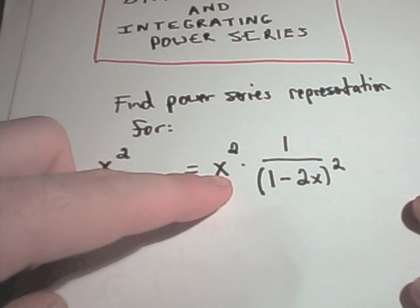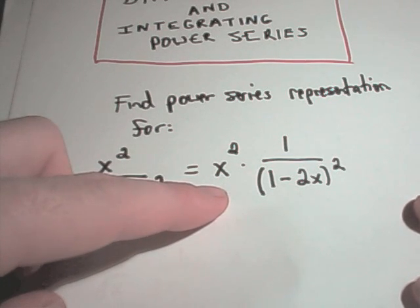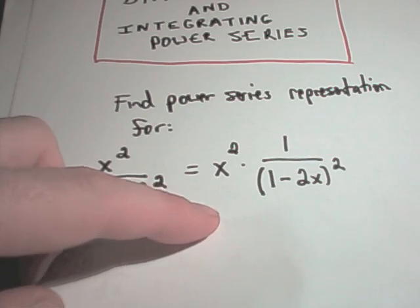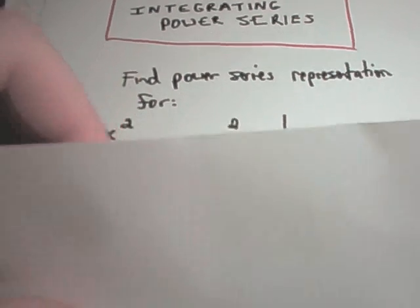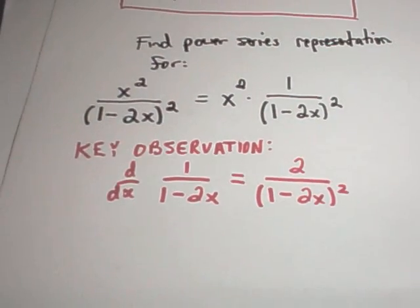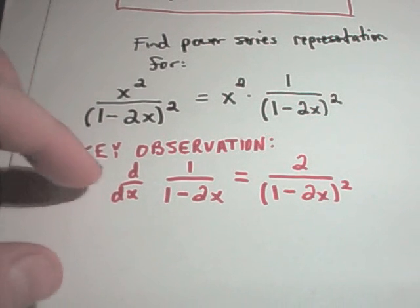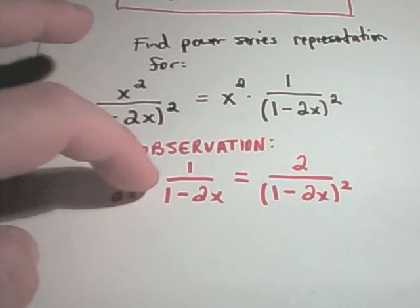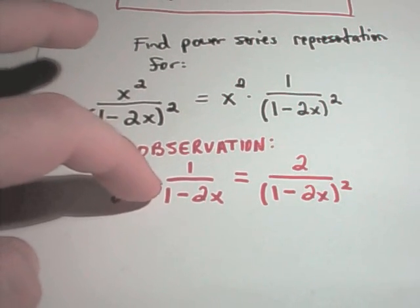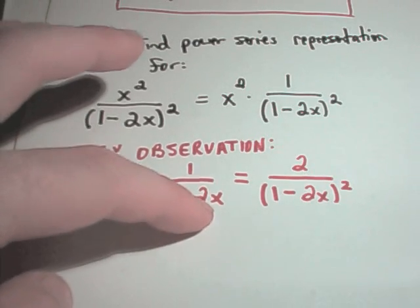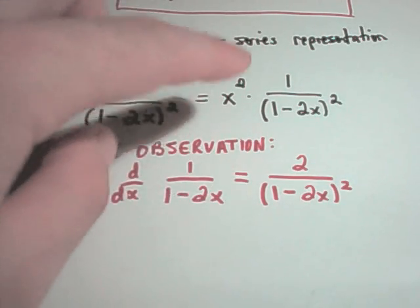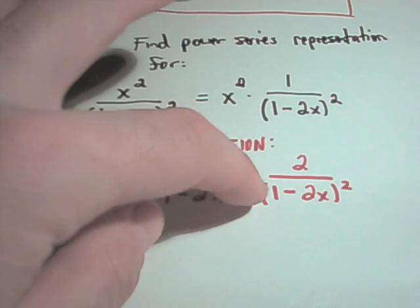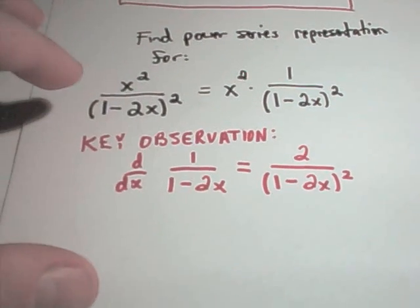You can pull the x squared out front and have 1 over the quantity 1 minus 2x squared. The key observation to get you started is to notice that if you take the derivative of 1 over 1 minus 2x to the first power, you'll get 2 over 1 minus 2x squared — not quite what we want, but close.